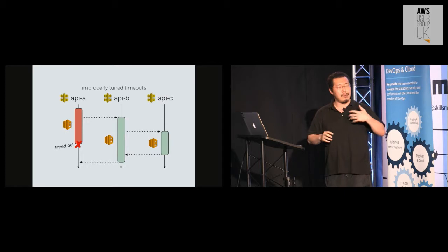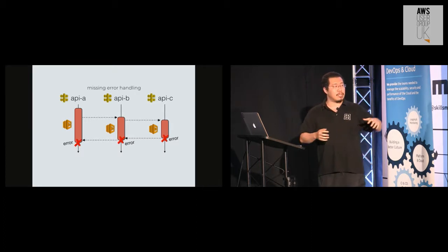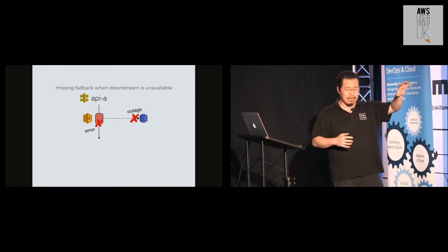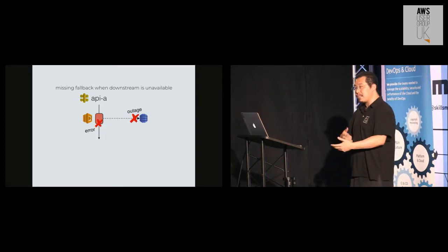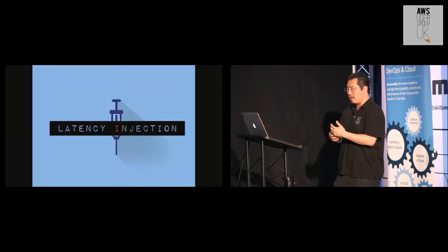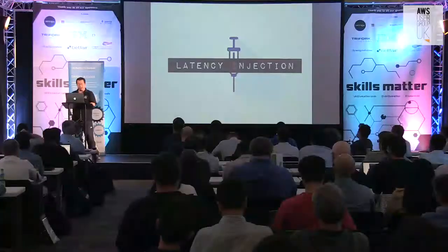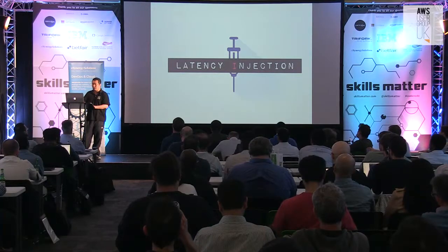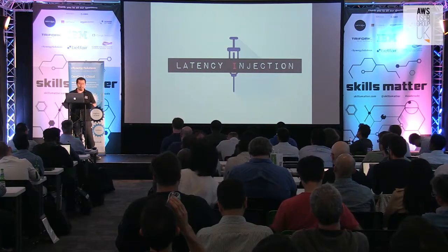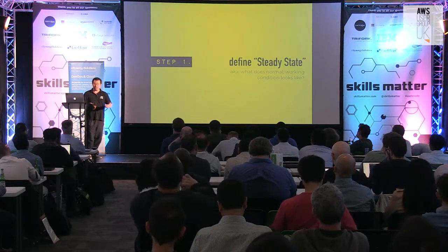Even with that said, there are still a lot of weaknesses in our own code that we can identify and uncover with controlled experiments. For example, maybe when we're communicating with a downstream system we're not handling timeout cases gracefully, or maybe we're missing error handling in cases where we could use a fallback when a downstream system has an outage. One of the most common things I run into in production tends to be performance or latency related, which can be symptomatic of a whole host of different issues — Amazon having a networking issue, a server that's overloaded, or a server experiencing a long garbage collection pause.